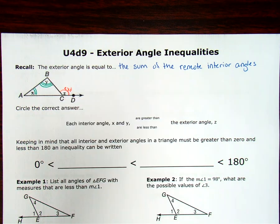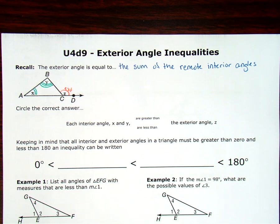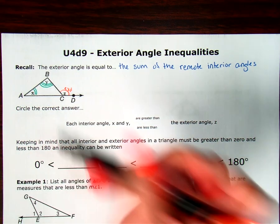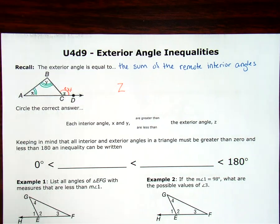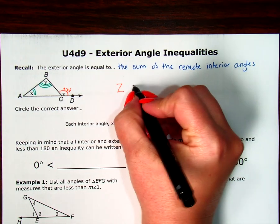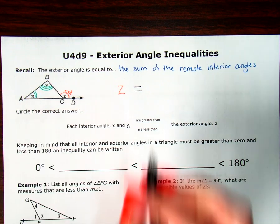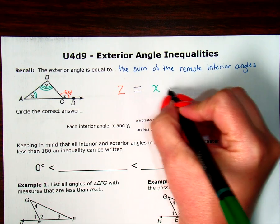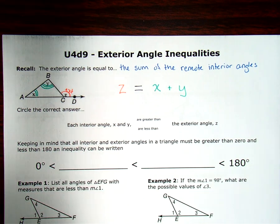I'm putting different measure arcs on them so you can tell that they shouldn't be equal to each other — they're all different angles. So my exterior angle Z is going to be equal to the sum of the remote interior angles. My two remote interior angles are X and Y, so when I add together X plus Y, I know that equals Z.